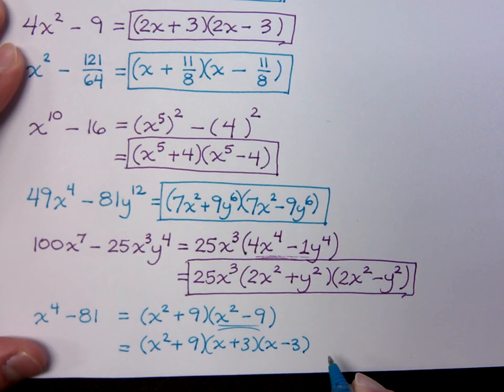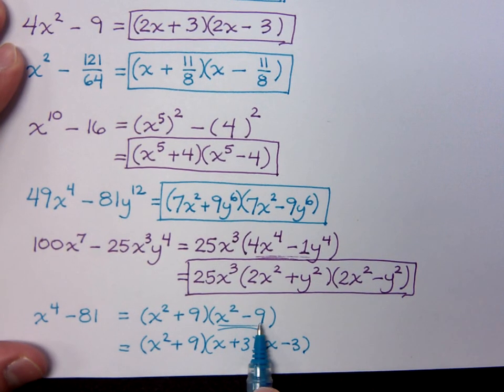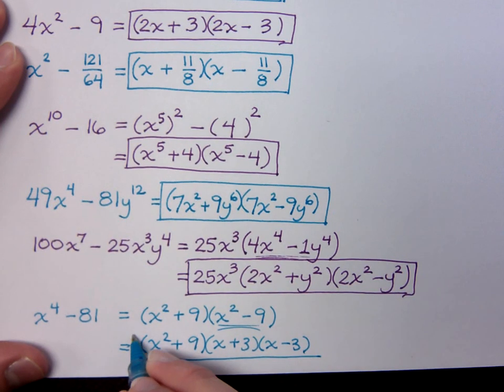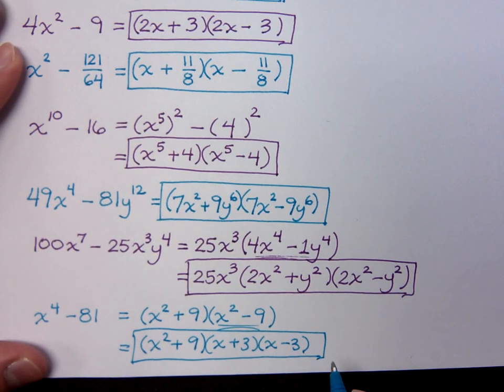And then this guy right here breaks down as x + 3 times x - 3. We can only break this guy down further because each piece was a square and we had a difference. The sum of squares, you bring him down, he doesn't change. The difference of squares showing up again means there's more work to be done. So always look for that.